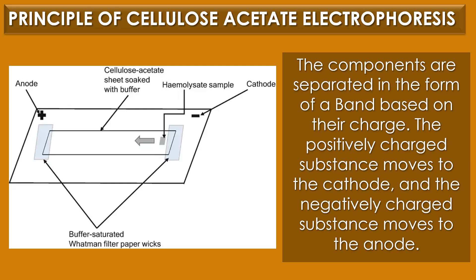The positively charged substances move to the cathode and the negatively charged substances move to the anode. At the end of the electrophoresis, the separated components can be stained and unstained for visualization purposes and for further quantitative analysis.